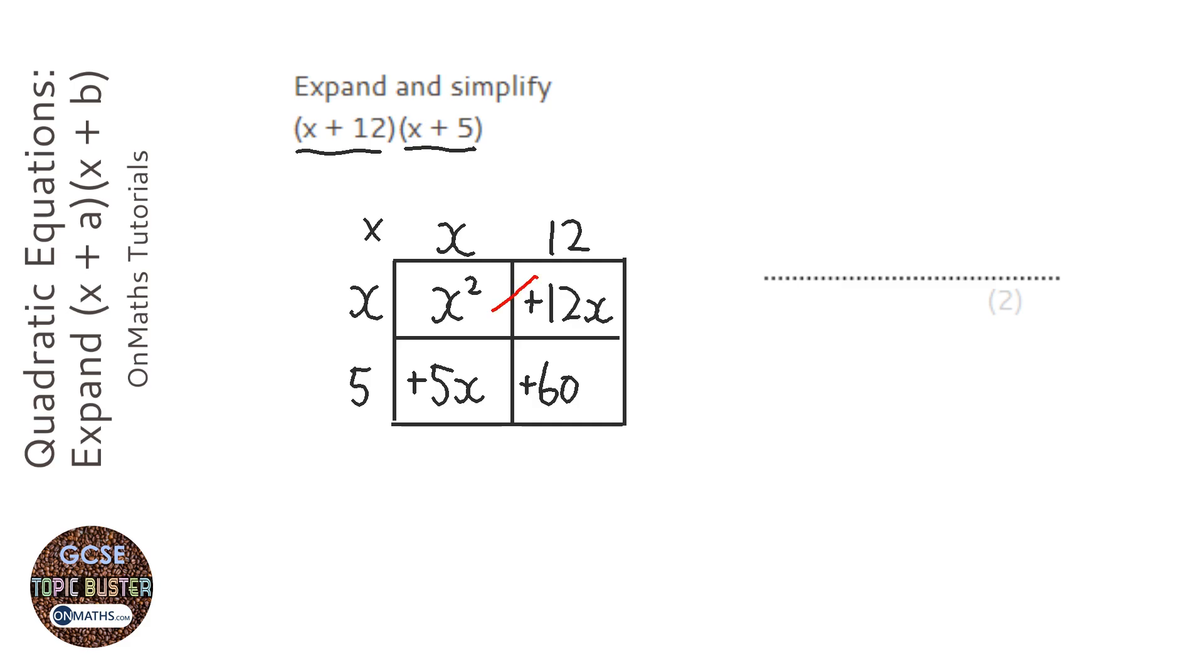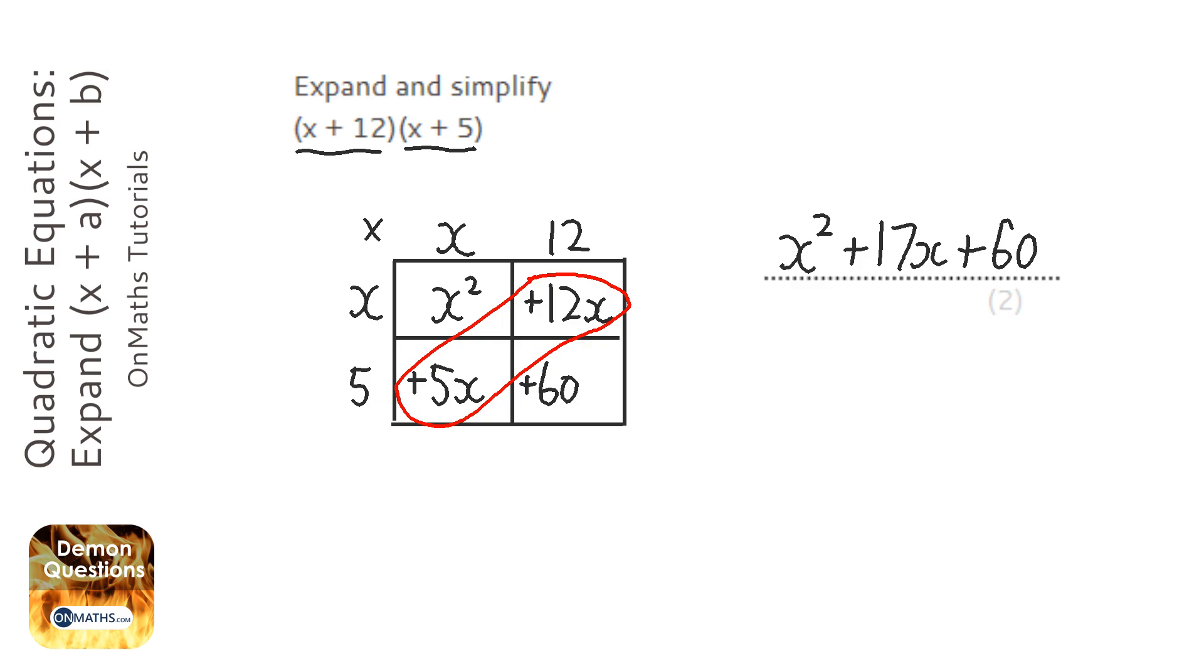Now the x terms, which are these two here, we'll add together for our answer. So it would be x squared plus, 12x plus 5x is 17x, plus 60. Now be careful, you can't add x squared and x terms, so you've got to keep them apart in your answer.